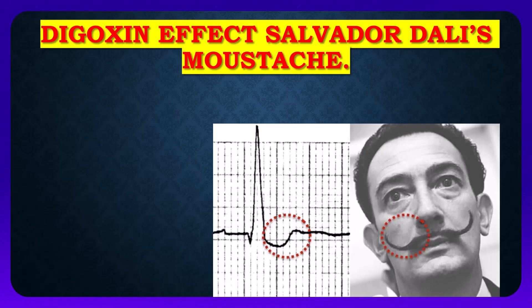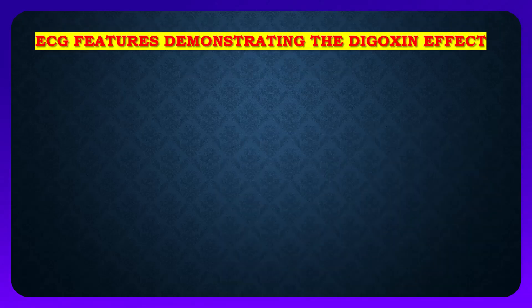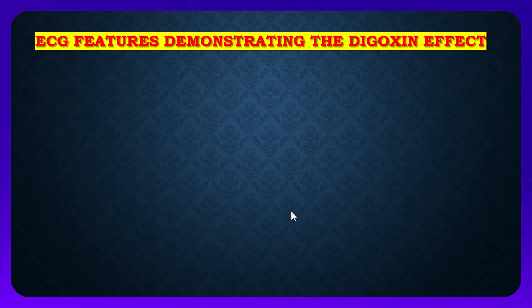Bismillahirrahmanirrahim. Today I will discuss the digoxin effect, which is also called the Salvador Dalí moustache sign. This sign appears on the ECG graph due to digoxin and is also called the Salvador Dalí moustache sign. ECG features demonstrating the digoxin effect include the first feature: ST segment depression, which is down-sloping or scooped.